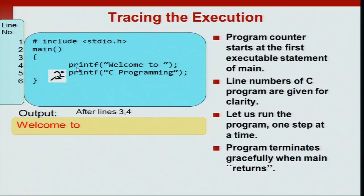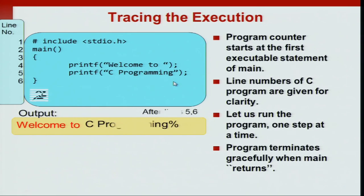First we execute the first line of the code. After we are done executing lines 3 and 4, the message 'welcome to' will be printed on the terminal. This will be followed by the next line, which says 'C programming'. After the next line executes, it will print 'C programming'. I have given this in two different colors to highlight that one was printed by the first line and the other was printed by the second line; otherwise the colors have no special meaning.